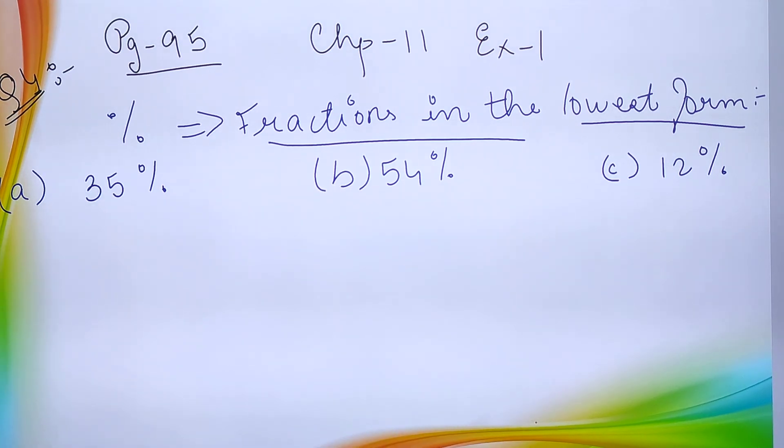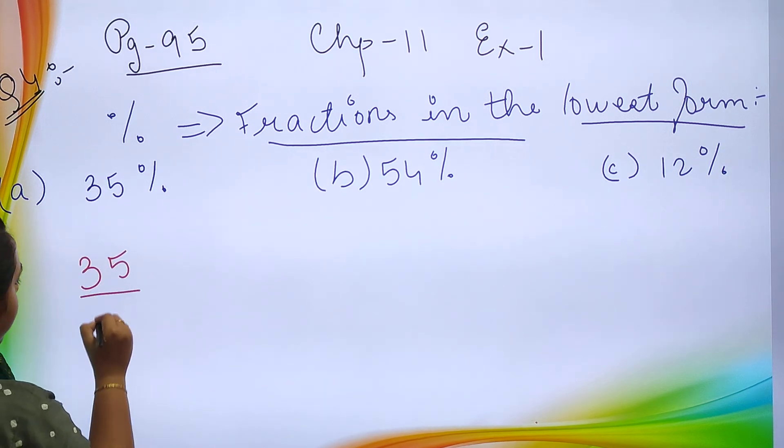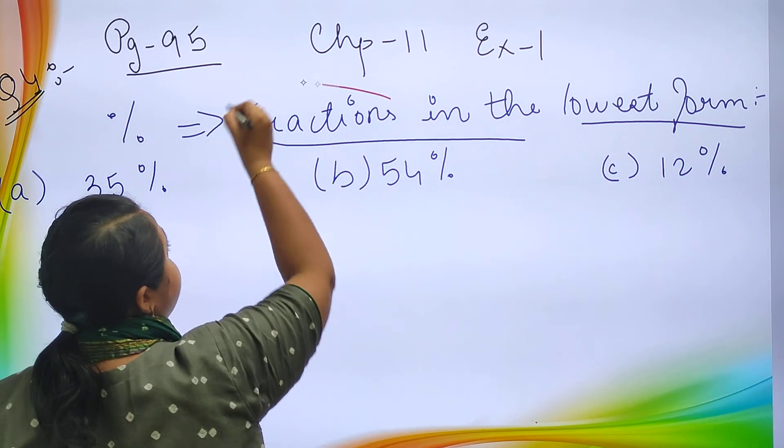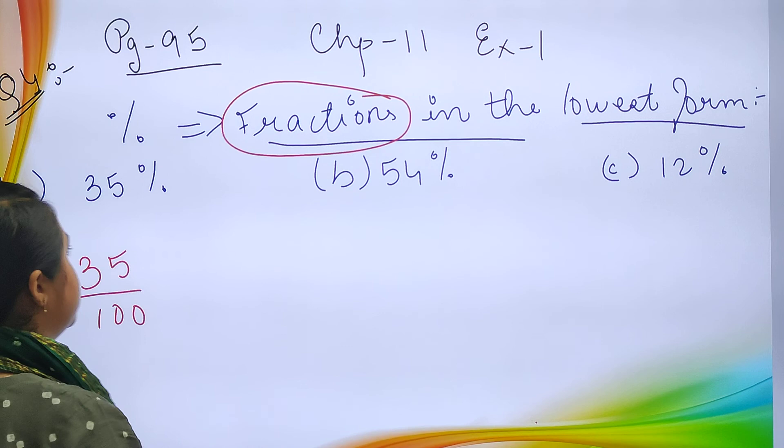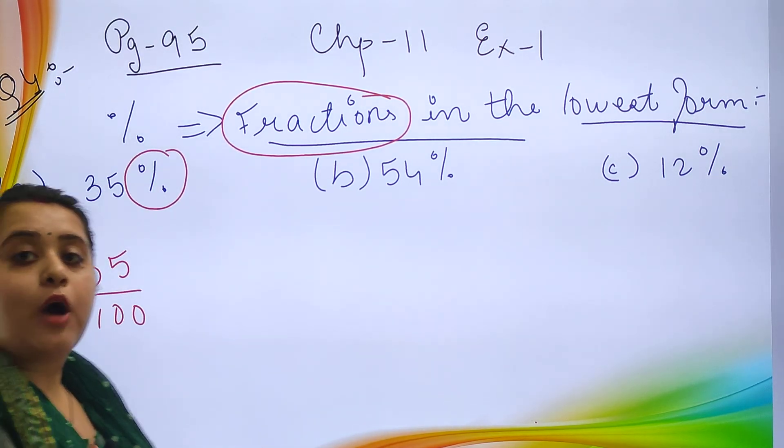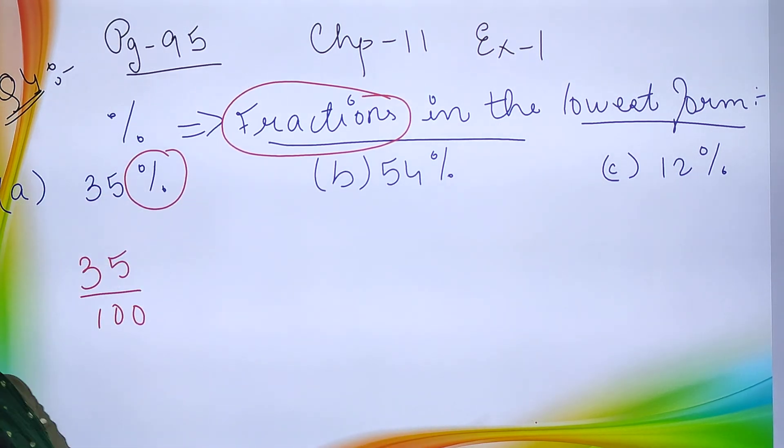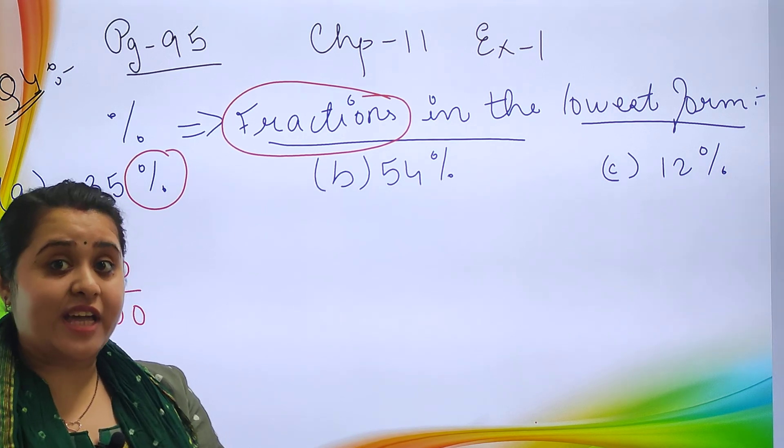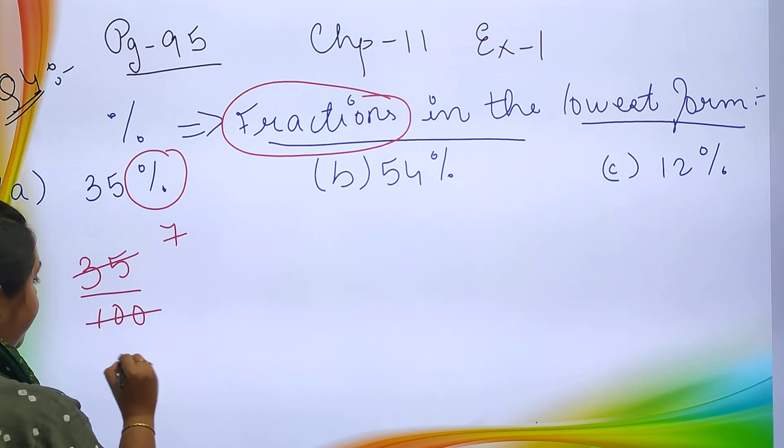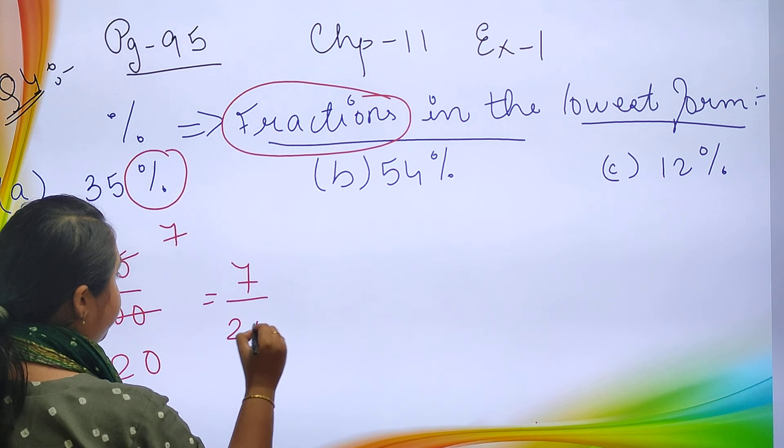This chapter is very easy. What we will be doing? 35 upon 100. Why 100? Because we are supposed to convert it into fractions. We will be doing the cutting part. We can observe that 35 goes in the common table of 5. 5 times 7 is 35, 5 times 20 is 100. So your final answer will be 7 upon 20.